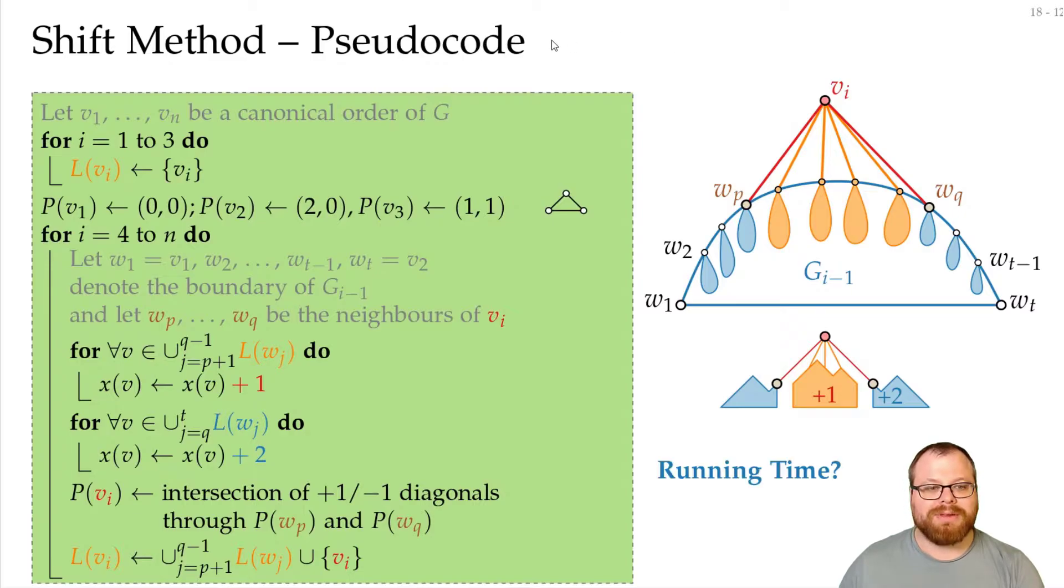Now what about the running time here? Everything here is constant, so we only have to look at the loops. If we look at one step, if we take all the vertices in these L sets, this might be linearly many that we have to shift.